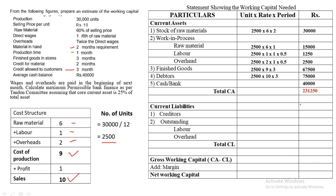All current assets are now calculated. Adding them up gives Total Current Assets = ₹2,31,250. Moving to current liabilities: Creditors are always taken at raw material rate = ₹6; period = 2 months (credit for material); 2,500 × 6 × 2 = ₹30,000.